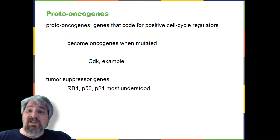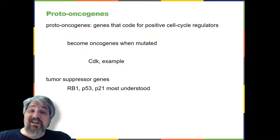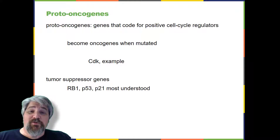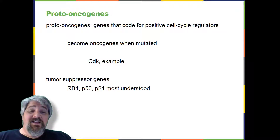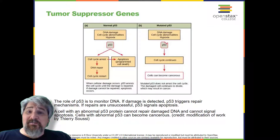Tumor-suppressor genes: like proto-oncogenes, many of the negative cell cycle regulatory proteins were discovered in cells that had become cancerous. Tumor-suppressor genes are genes that code for negative regulator proteins that, when activated, can prevent the cell from undergoing uncontrolled division. The collective function of the best-understood tumor-suppressor gene proteins — retinoblastoma protein (RB1), P53, and P21 — is to put up a roadblock to cell cycle progress until certain events are completed. A cell carrying a mutated form of a negative regulator might not be able to halt the cell cycle if there is a problem. Mutated P53 genes have been identified in more than half of all human tumor cells.